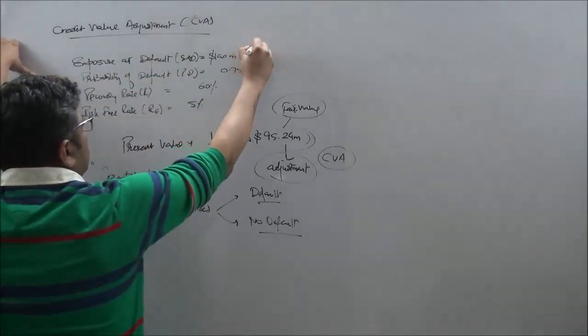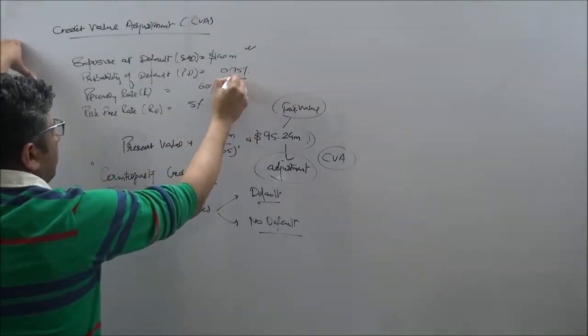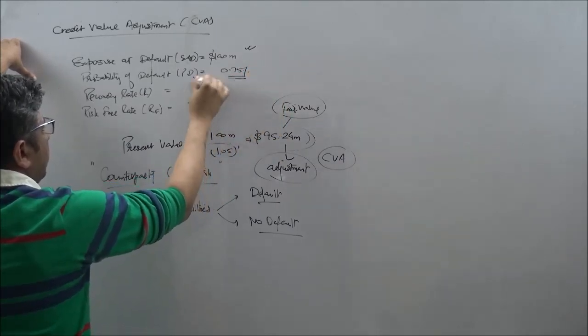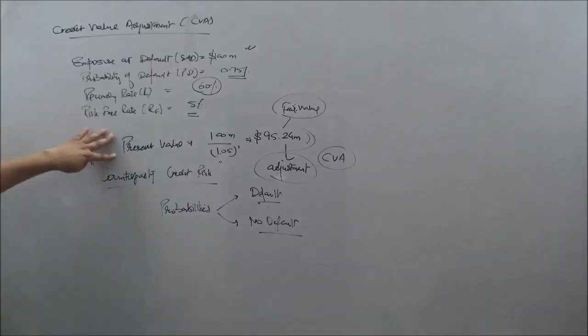The exposure as default is 100 million dollars, there is a probability of default at 0.75%, there is a recovery rate at 60%, of course we have used this 5% in the case for the present value.